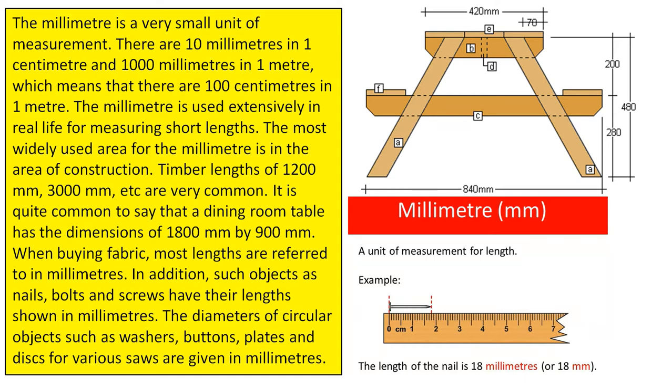It is quite common to say that a dining room table has dimensions of 1800 millimetres by 900 millimetres. When buying fabric, most lengths are referred to in millimetres.